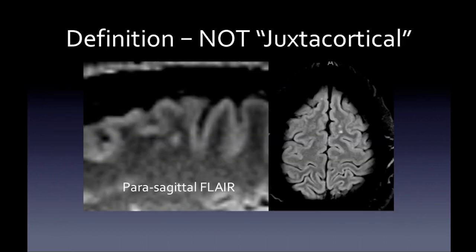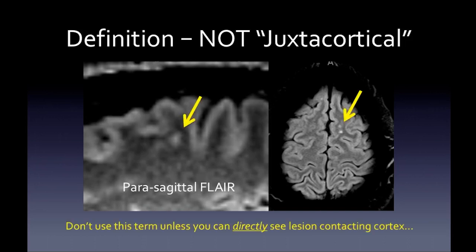Here is an example of what is not a juxtacortical lesion — these are subcortical lesions. Don't use the term juxtacortical unless you can directly see the lesion contacting the cortex. Subcortical lesions would not be specific for multiple sclerosis.